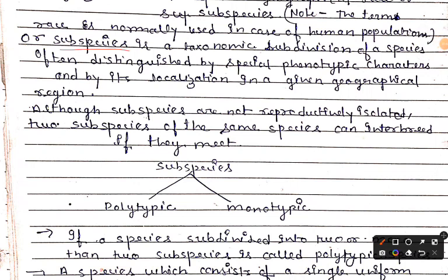Sub-species is a taxonomic subdivision of a species, often distinguished by special phenotypic characters and by its localization in a given geographical area. So phenotypic characters are used to identify it as separate and called a sub-species, and the geographical area is also different.